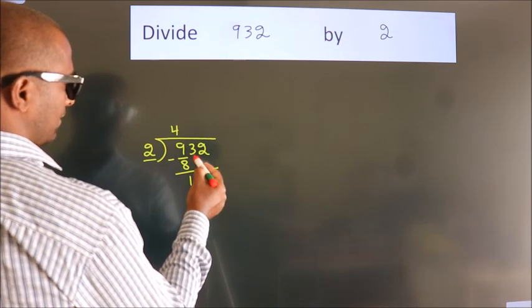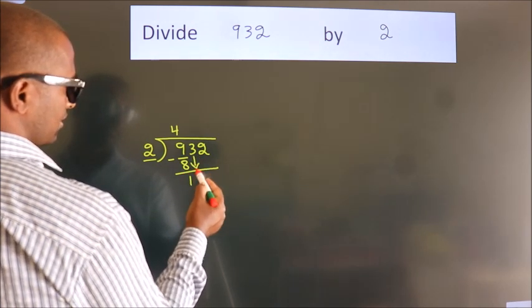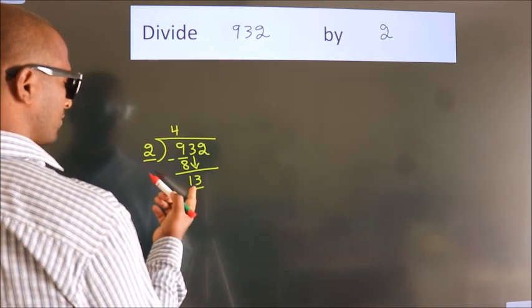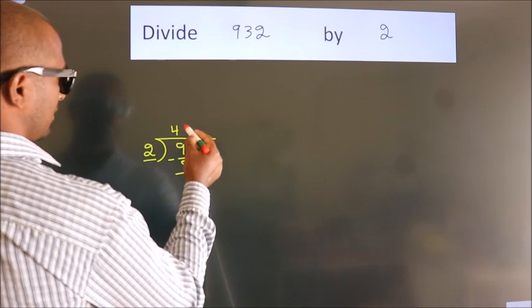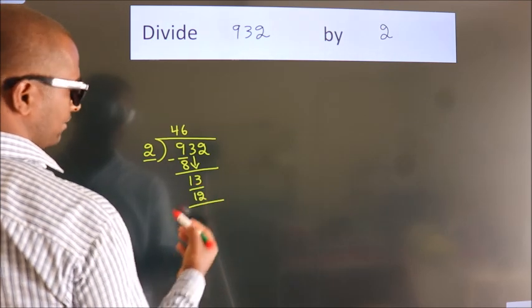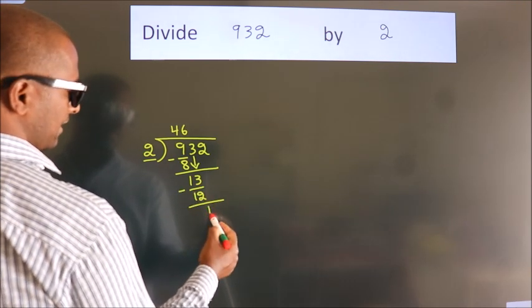After this, bring down the beside number. So 3 down, so 13. A number close to 13 in 2 table is 2 times 6 equals 12. Now we subtract. We get 1.